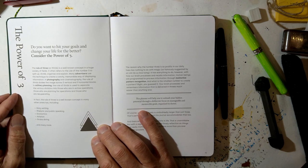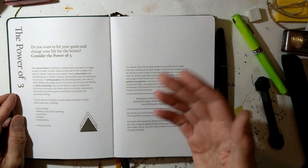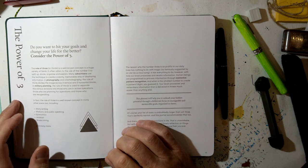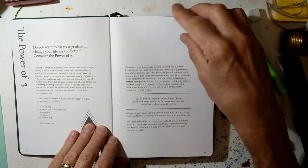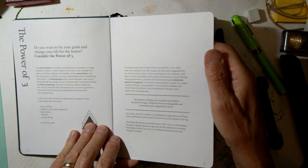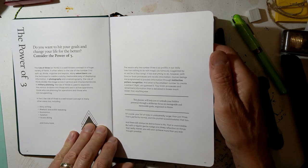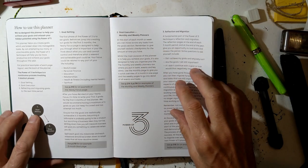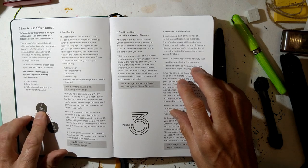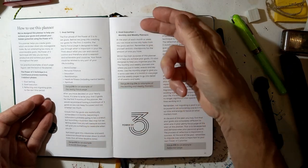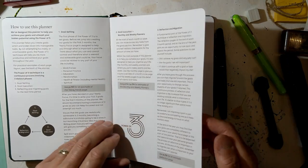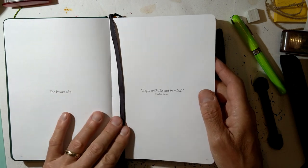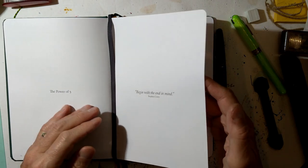The Rule of Three is a well-known concept in a variety of fields. It's a way of splitting up, dividing, organizing and explaining. Used in many areas like story writing, rhetoric, public speaking, economics, aviation. The reason why the number three is so prolific has nothing to do with magic, it has everything to do with how our brain processes. So it runs through the logic of why they reckon this is a good system to use. Goal setting, goal execution, reflection and migration back to goal setting.